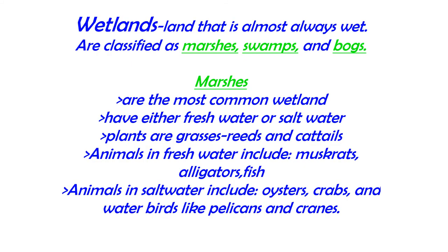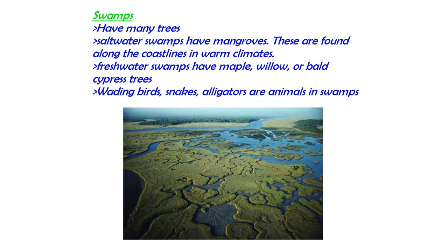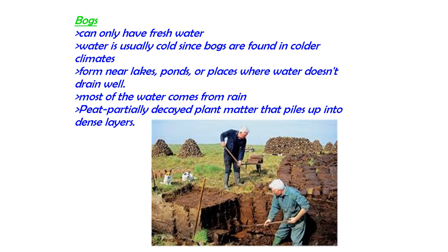It's also important that you be able to identify the differences between marshes, swamps, and bogs. They're all three called wetlands, but how are marshes different from swamps? Marshes have grasses, reeds, and cattails. Swamps have trees. Here's a beautiful picture of the Everglades. How are bogs different from marshes and swamps? Bogs can only have fresh water, and that comes mainly from rain. Bogs also have something called peat, which is decayed plant matter that piles up in that soggy wetland.